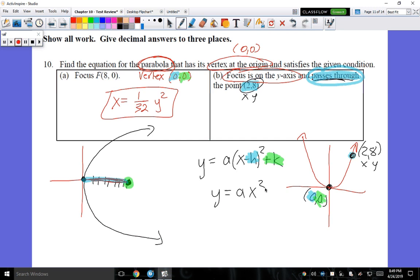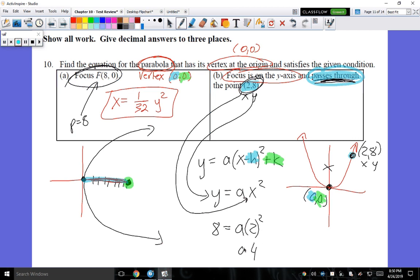Now, instead of doing this 4AP is equal to 1, I'm not going to do that because I'm not given the P value, which was 8 over here. I don't have this focus given to me. It just said that it was on the Y axis somewhere. The only location it gave me was this passing through point of (2,8). And guess what? I'm going to put 2 here for X and I'm going to put 8 here for Y so that I can solve A a different way. So we have 8 is equal to A times 2 squared, which is 4A is equal to 8, divided both sides by 4, and of course we get A is equal to 2.